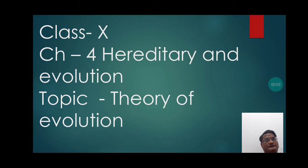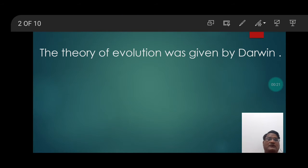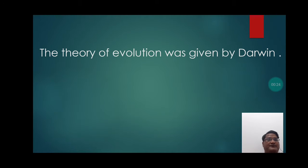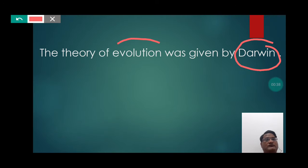Good morning students of Snyder Tenth. Today we are going to discuss the topic Theory of Evolution from Chapter 4, Heredity and Evolution. The theory of evolution was given by Darwin, and specifically the contribution was of Charles Darwin, as he put forward the theory of evolution.